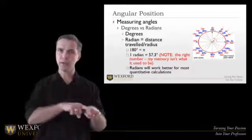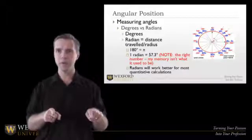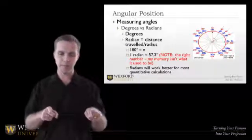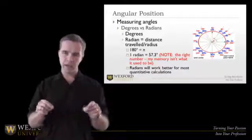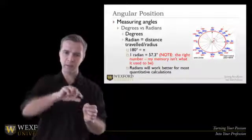The circumference of a circle is 2πr, 2 times pi times the radius. If I took the radius and took it along the outside edge of that circle, that's what a radian is.